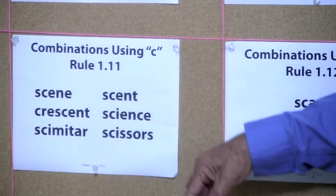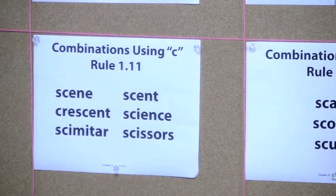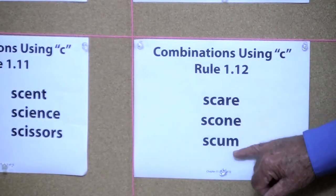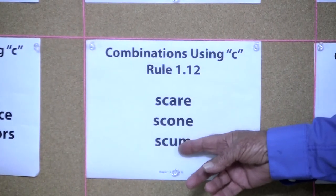If you change it around, if you made that E into an A, it would be scant, as in scone, scares, scum.